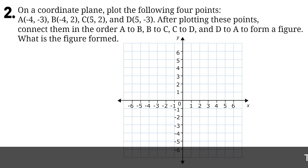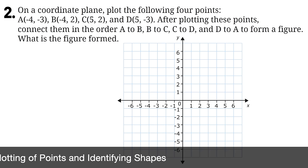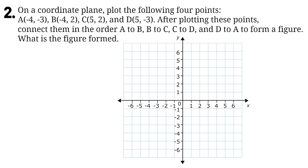Question 2. On a coordinate plane, plot the following four points: A(-4, -3), B(-4, 2), C(5, 2), and D(5, -3). After plotting these points, connect them in the order A to B, B to C, C to D, and D to A to form a figure. What is the figure formed?